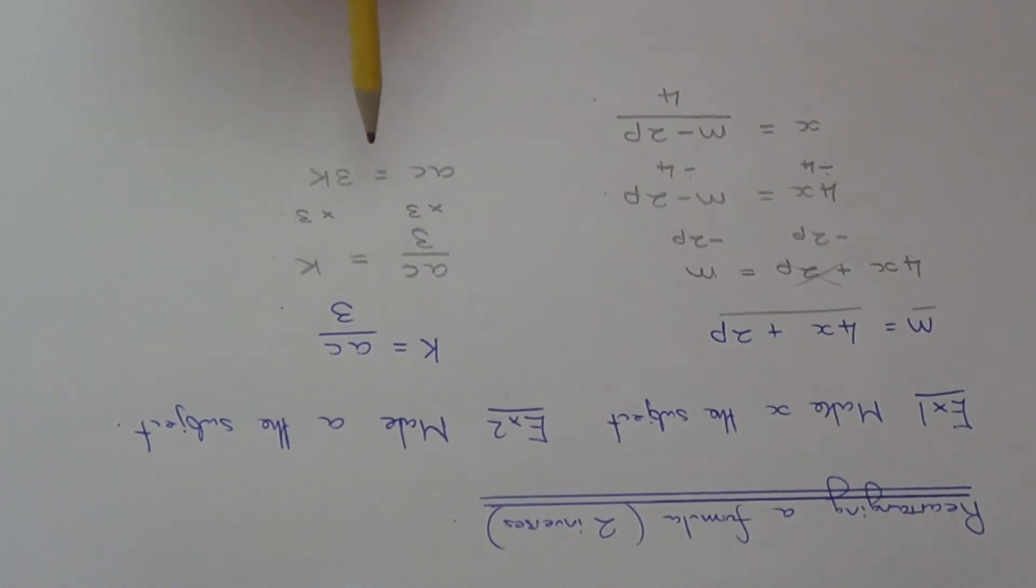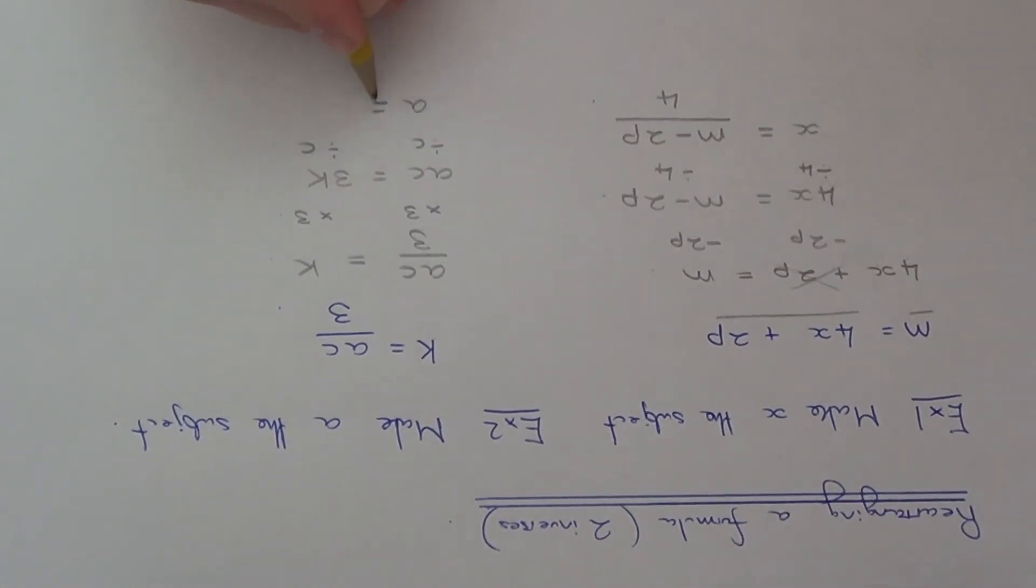We've got one final inverse to do. a is now being multiplied by c, so if we do the opposite which is to divide by c, divide both sides by c. On the left hand side that will leave us with a.